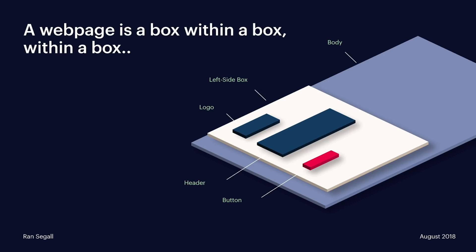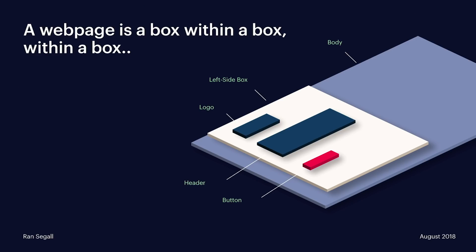The first concept is called the box model. Basically, everything on a page is a box within a box within a box. In this simple example, we have the body as the outermost box, then a box inside it called the left side box, and inside that we have several other boxes — the logo, the header, and the buttons. There's a hierarchy, kind of like a Matryoshka Russian doll: there is a parent, there is a child. In this specific case there are also siblings, because logo, header, and button are not inside one another — they're all children of the left side box.